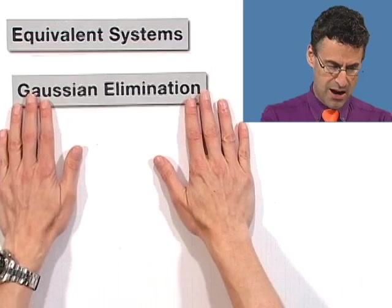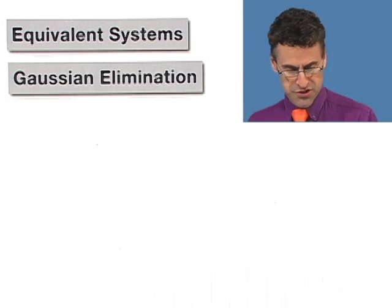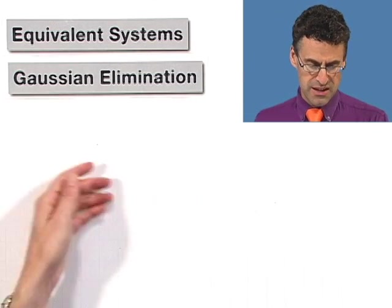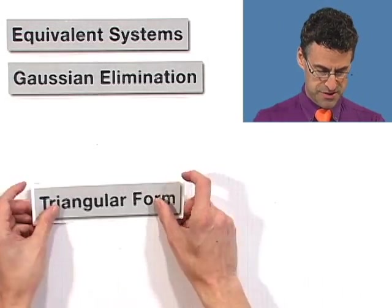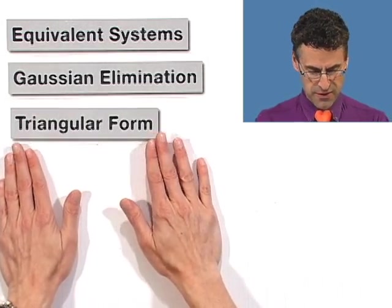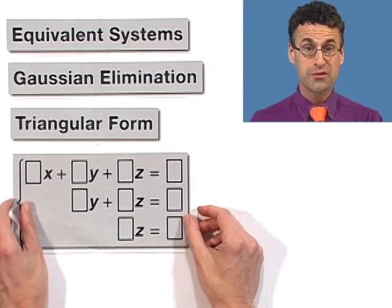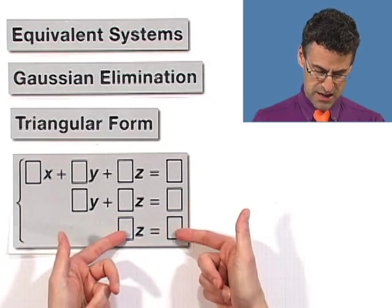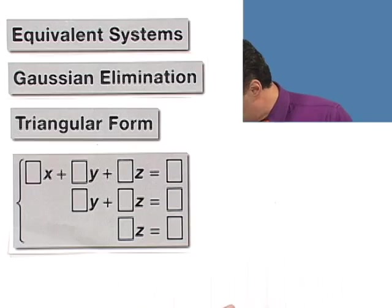So let me try to formalize this just a little bit for you. This entire concept here is known as Gaussian Elimination, named after the great mathematician Gauss. And the strategy is to use these different operations to create equivalent systems that land us in a very happy situation where we have a triangular form. Once we have a triangular form, we can use back substitution to figure out z, then figure out y, and then figure out x. Bang. That's the entire concept here.